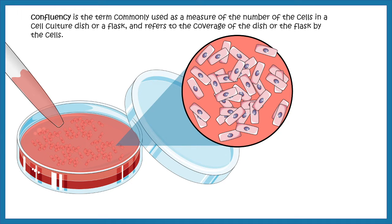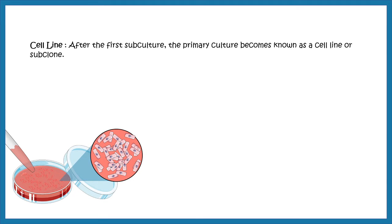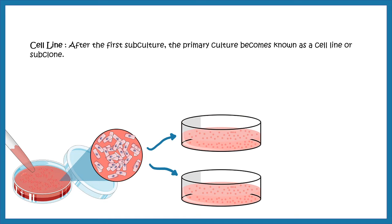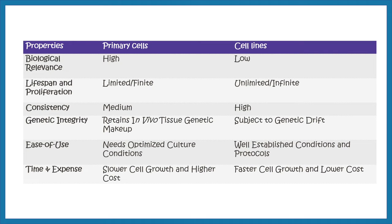The first time you subculture these confluent cells, they become known as a cell line. A cell line is a sub-clone derived after the first subculture. When cells are confluent, you separate them into two different vessels — that is subculturing. Cell lines derived from a primary culture have a limited lifespan, and as they are passaged, cells with the highest growth capacity predominate, resulting in high genotypic and phenotypic uniformity in the cultured population.